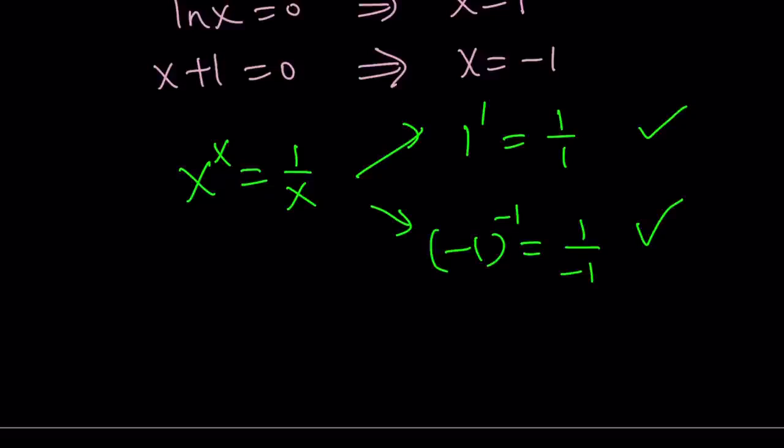Therefore, both solutions are good and valid. All right? So we only got two solutions. Let's go ahead and take a look at the graph, and we'll talk about the graph a little bit, and we're just going to wrap everything up.